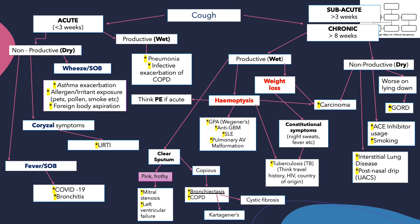In a chronic cough with weight loss and haemoptysis, you should start thinking about cancer. In the presence of constitutional symptoms such as night sweats and fever, you should start thinking about TB. If you suspect TB or once TB is diagnosed, you need to think about HIV, the patient's country of origin, and their travel history. In a chronic cough with haemoptysis, you need to remember vasculitis — including Wegener's, also known as granulomatosis with polyangiitis, anti-GBM disease also known as Goodpasture's, and SLE. And think about your non-pulmonary causes as well, such as ACE inhibitor usage and GORD. Lastly, in a chronic dry cough, you need to start thinking about interstitial lung disease.